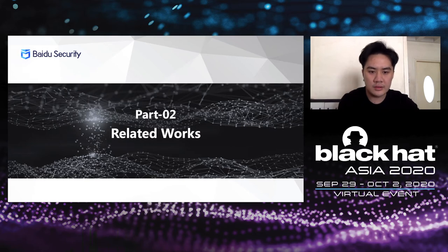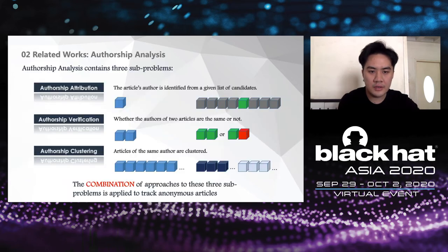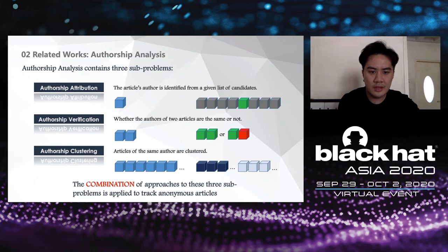Let's look at some previous works. The problem of tracking anonymous articles is defined as authorship analysis, and it contains three subproblems. Authorship attribution takes one text and finds its author from a list of candidates. Authorship verification takes two texts and tells whether the authors of the two articles are the same or not. Authorship clustering takes a list of text inputs, then organizes the articles based on their authors. The combination of approaches to these three tasks is applied to tracking anonymous articles.